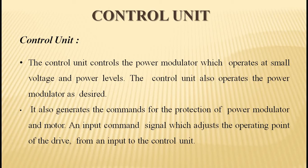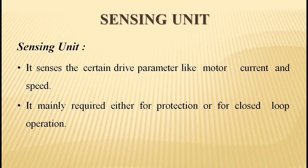The next component is the control unit. The control unit controls the power modulator, which operates at small voltage and power levels. The control unit also operates the power modulator as desired and generates commands for the protection of the power modulator and motor. An input command signal adjusts the operating point of the drive. Next is the sensing unit, which senses certain drive parameters like motor current and speed, required either for protection or for closed loop operation.